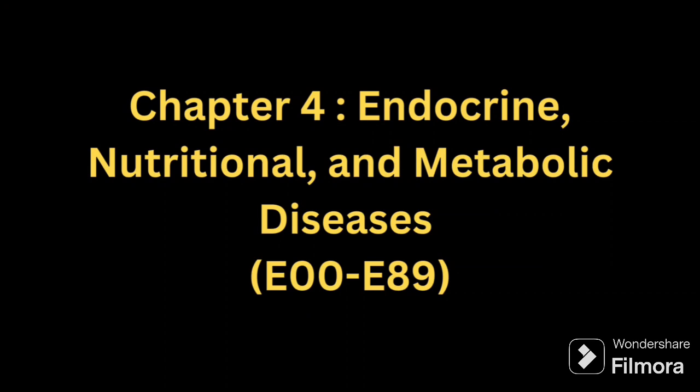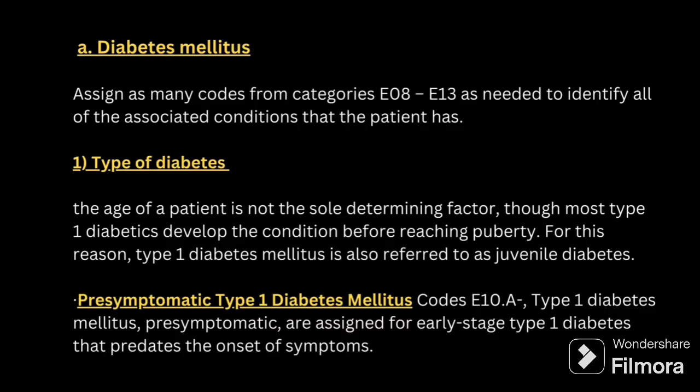So today we are starting with chapter 4, that is Endocrine, Nutritional and Metabolic Diseases. The code series for this is E00 to E89. In this chapter, mainly we will be discussing about diabetes mellitus condition. The first thing we have to know is the code assignment for diabetes — for diabetes, we will be coding from E08 to E13.